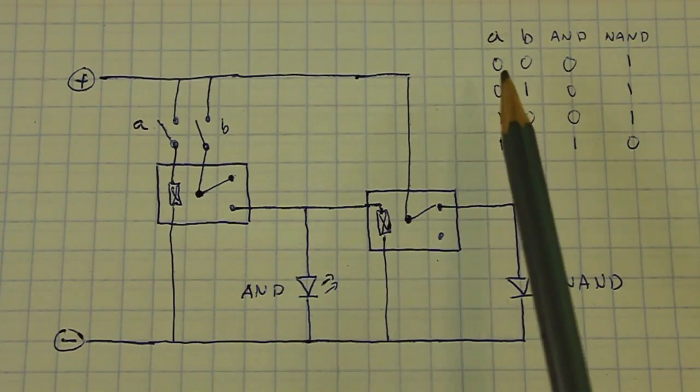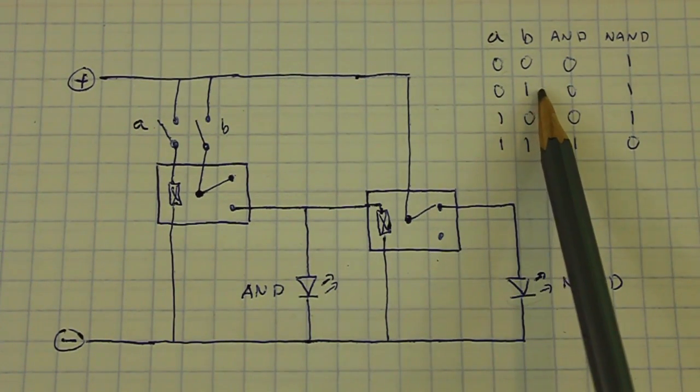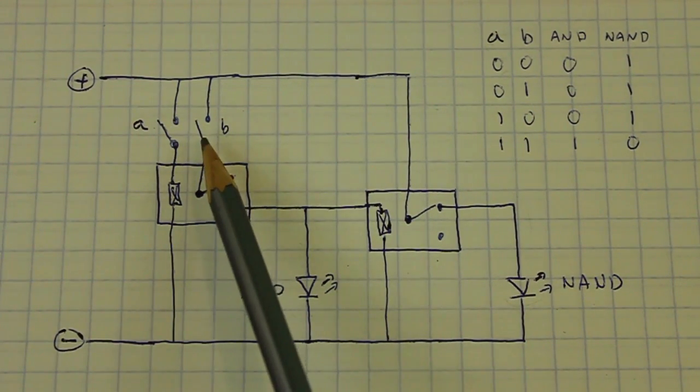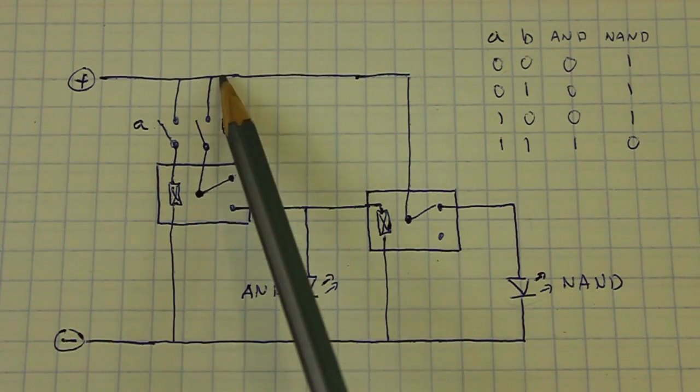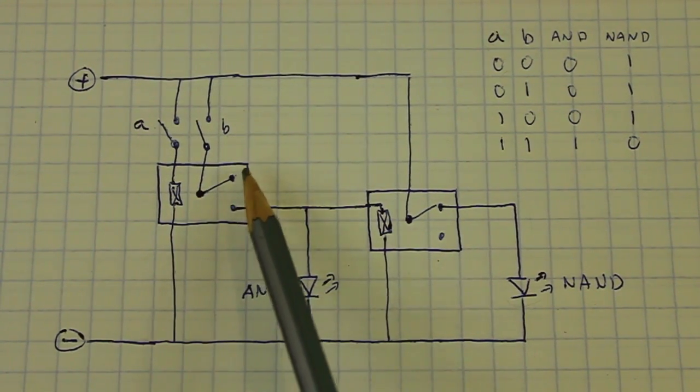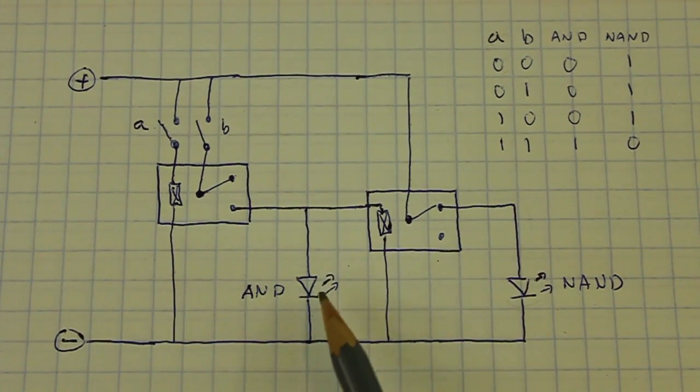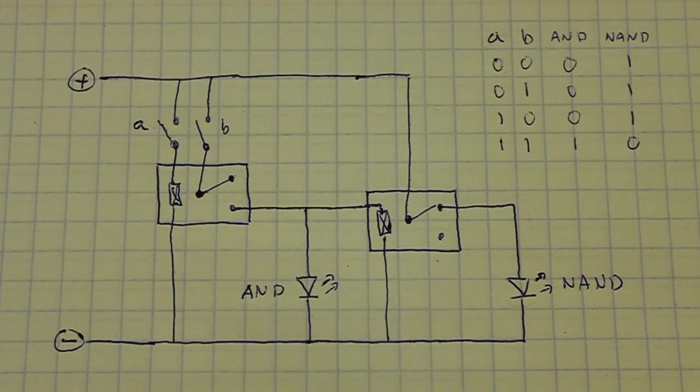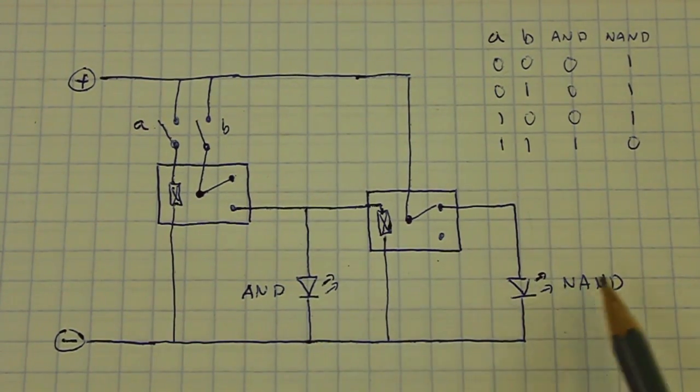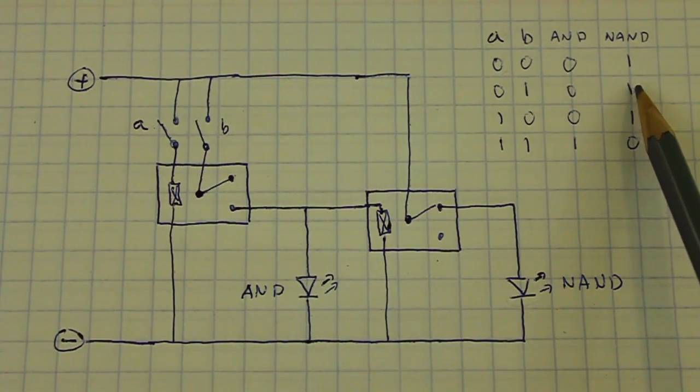Now, the next case is 0 in A and 1 in B. We have switch A open and switch B closed. The current flows through here. But it can go nowhere. So, AND, the LED AND is still OFF. 0. And the NAND LED is still ON. 1.